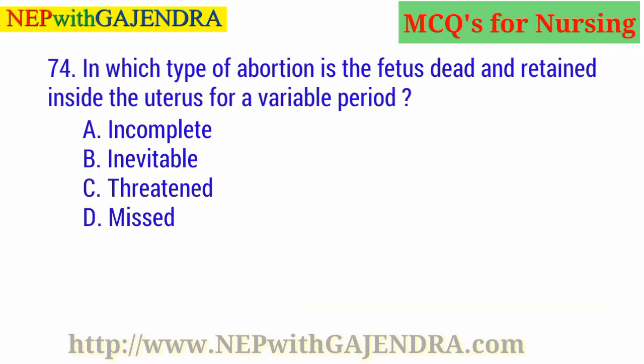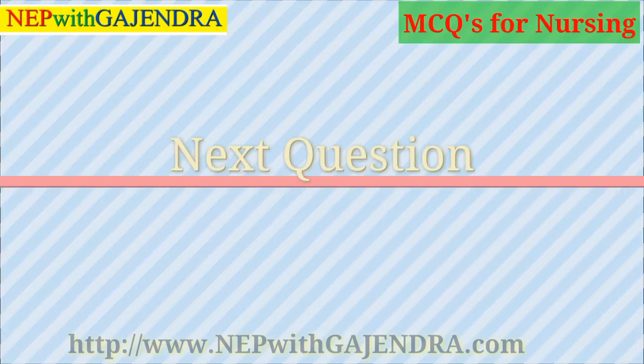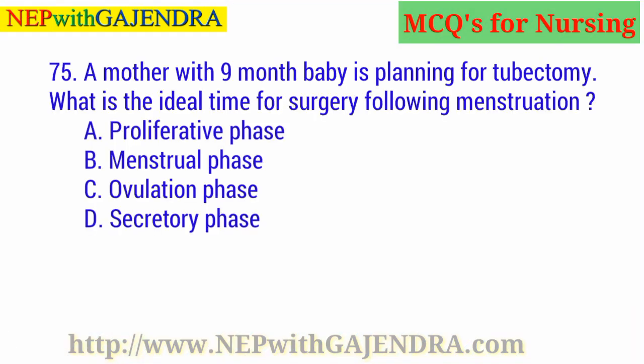In which type of abortion is the fetus dead and retained inside the uterus for a variable period? A. Incomplete. B. Inevitable. C. Threatened. D. Missed. The right answer is D: Missed.